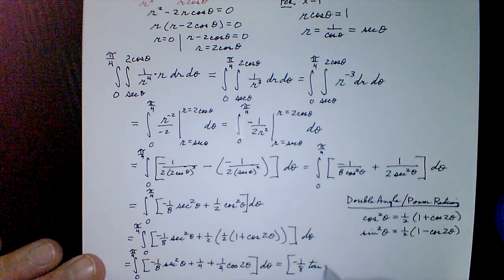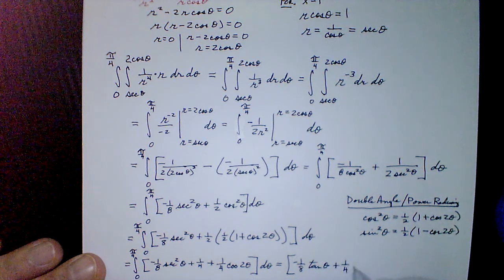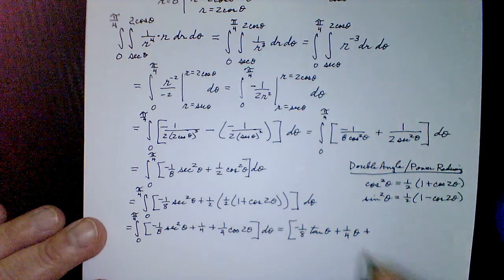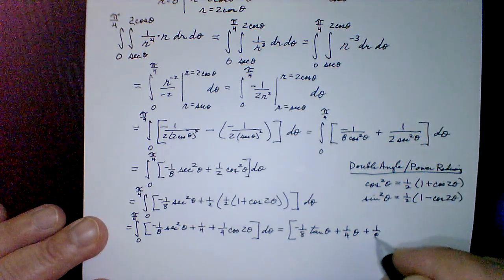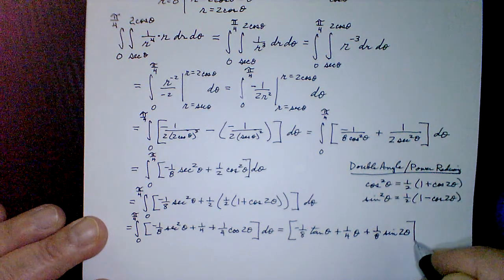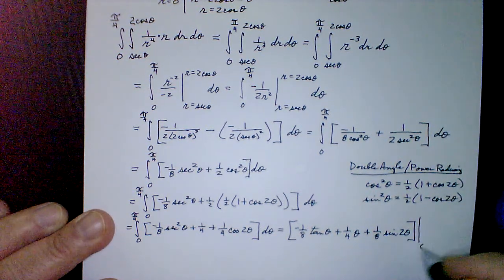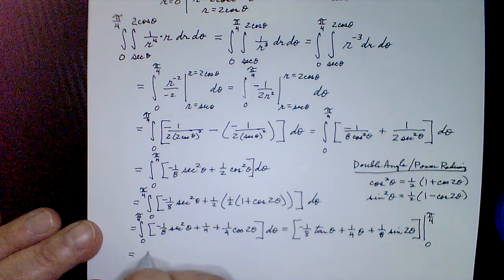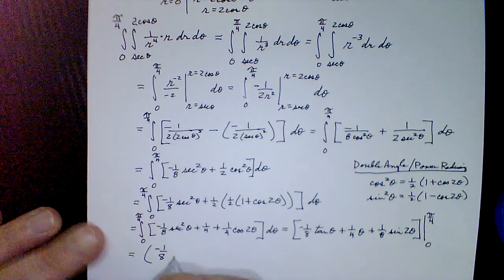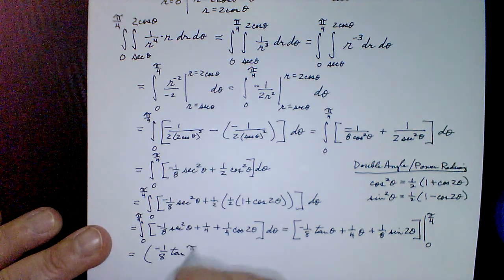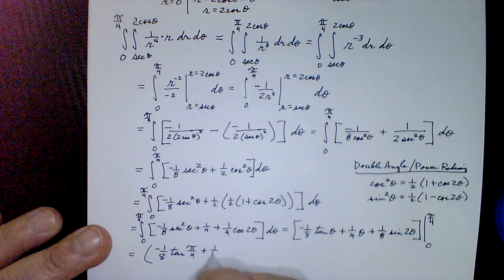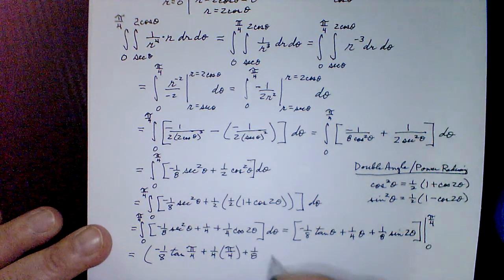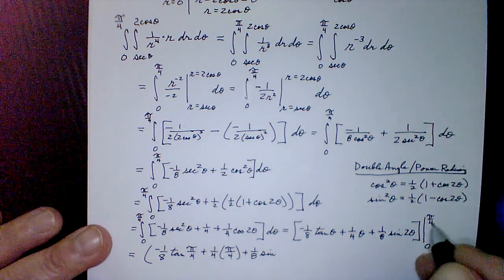Integrating term by term: −(1/8)·sec²(θ) integrates to −(1/8)·tan(θ); 1/4 integrates to (1/4)θ; and (1/4)·cos(2θ) integrates to (1/8)·sin(2θ). This is evaluated from 0 to π/4.